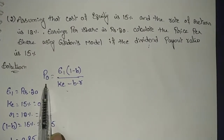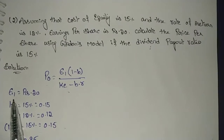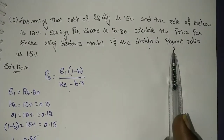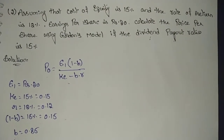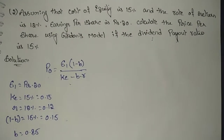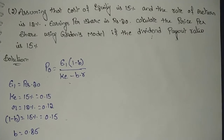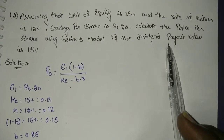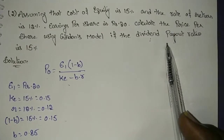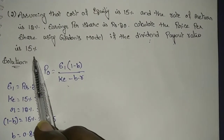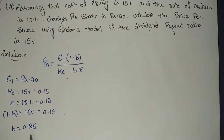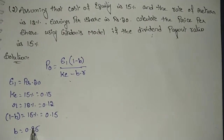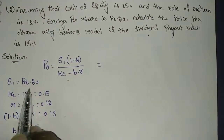Applying the formula: (1 - b) is the dividend payout ratio. The retention ratio b is calculated as 100% minus the dividend payout ratio. Since the dividend payout ratio is 15%, b = 100 - 15 = 85%, that is 0.85. With all values known, we substitute into the formula.